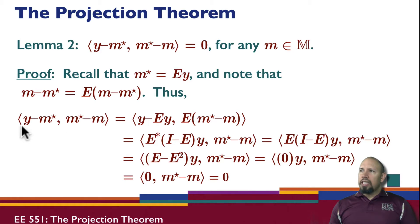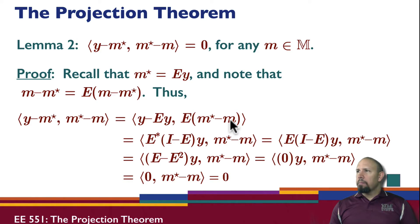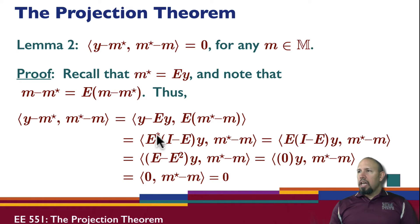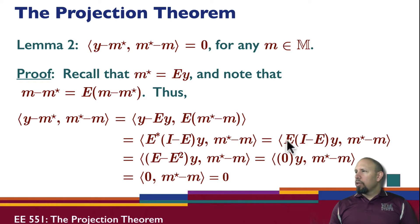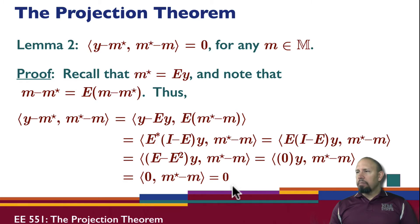When we actually look at this inner product, we have Y minus E times Y. M star minus M is equal to E times (M star minus M). By the property of the adjoint, I can take this E over to the other side of the inner product as its adjoint. Since E is a projector, it is self-adjoint, so E adjoint equals itself. When I multiply this out, I get E minus E squared. But because E is a projection, E equals E squared, and so that equals zero times Y — and so this inner product is equal to zero.